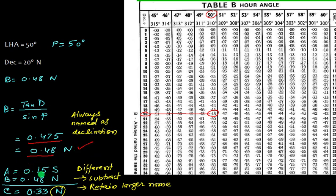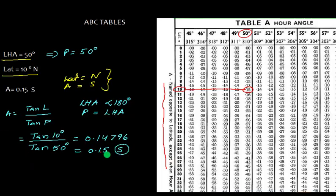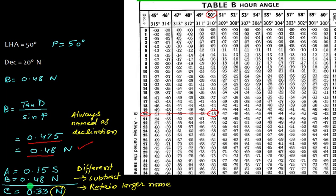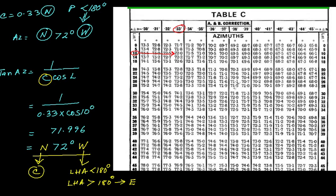We know A is 0.15 south and B is 0.48 north. These are different names, so we subtract and get the value of C as 0.33, retaining the larger name. The larger name is north, so C equals 0.33 north. Now we go to table C and with 0.33 and latitude 10, the value given is 72 degrees.